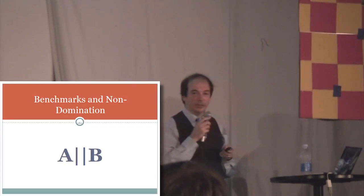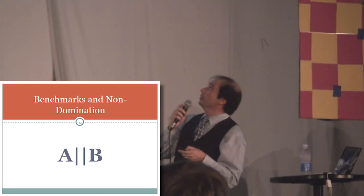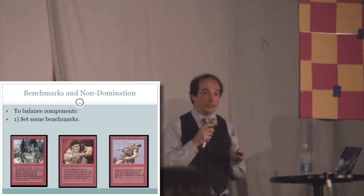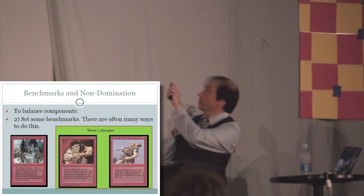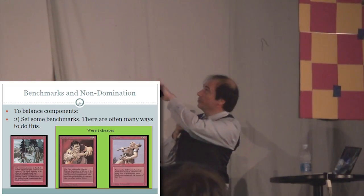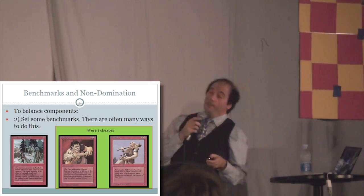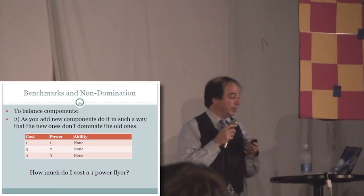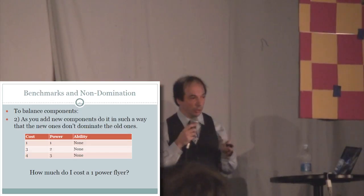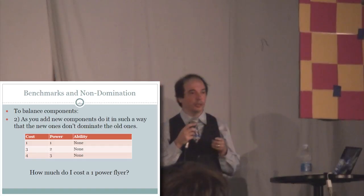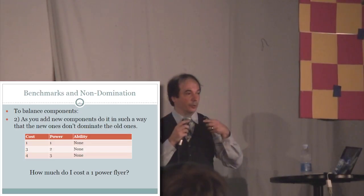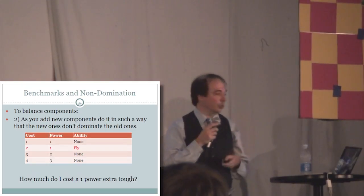Here's another technique which I call benchmarks and non-domination because I like really boring names. A technique which I've used a number of times is to set a benchmark for the very simple cards or components. In Magic, these cards look like there's a lot of writing there, but really, the first one is a one, the second one's a two, the third one's a three. And the benchmark you can play with. At the beginning when I was first designing Magic, these guys were cheaper because the simplest place to begin with the balance for your cards is one cost one, two cost two, three cost three. After I played it a bit, I realized that I needed to change that.